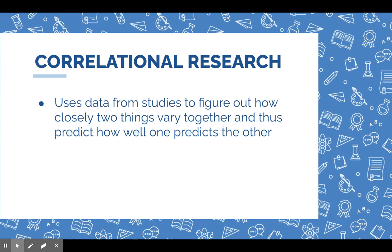I'm going to use the example of a study about weight gain and TV watching as we go through these next few slides. Those are your two variables and you're trying to see how they vary with each other. You might make a prediction — say, the more TV you watch, the more weight you gain. Then you're going to use your data, whether from an experiment or a survey, to see if that's actually true. Do these numbers go together? Do they correlate?